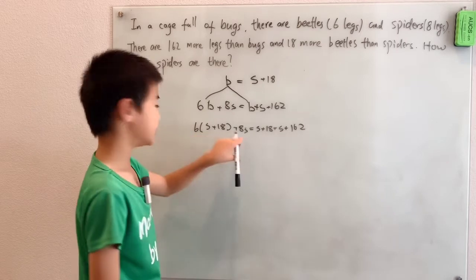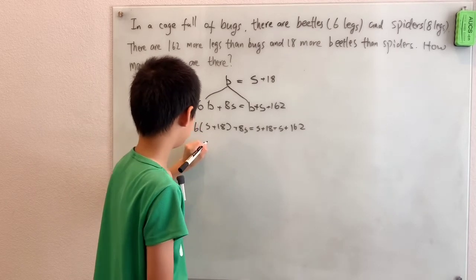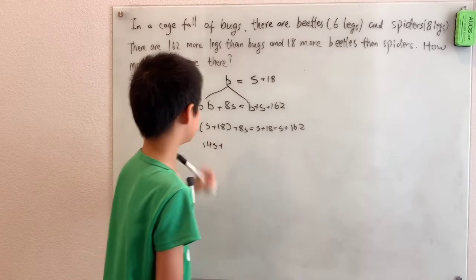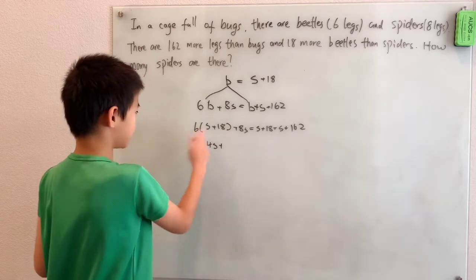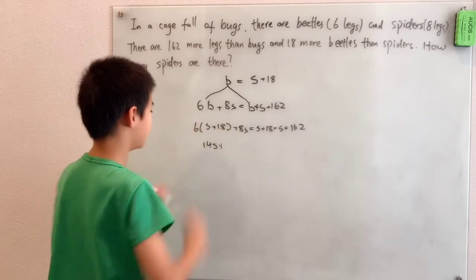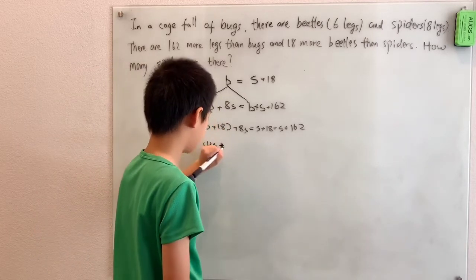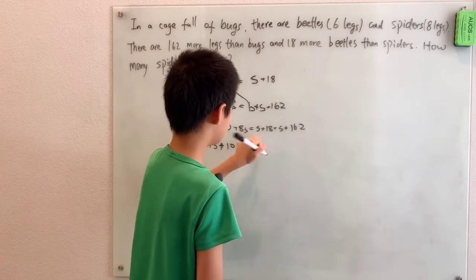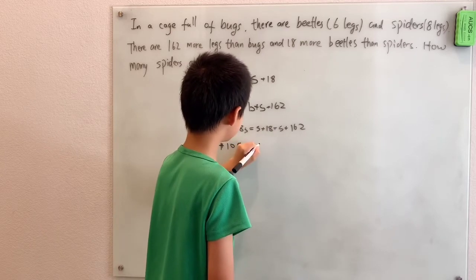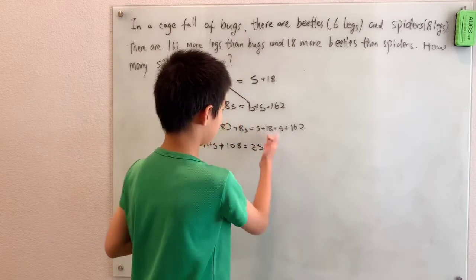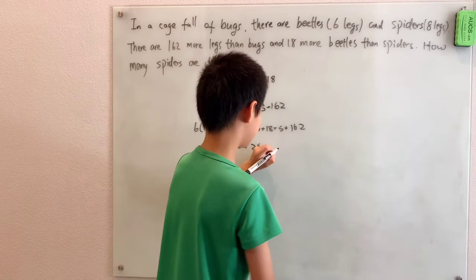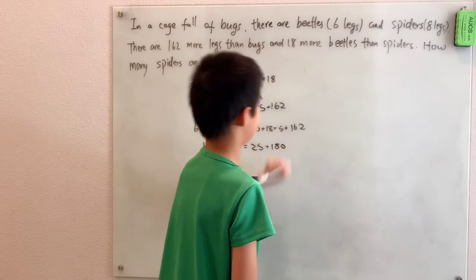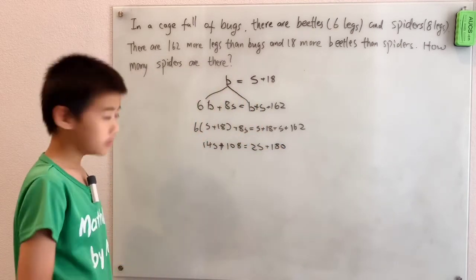We have 6S plus 8S, or in other words, 14S plus 6 times 18, which is 108, equals S plus S, 2S plus 18 plus 162 is 180.